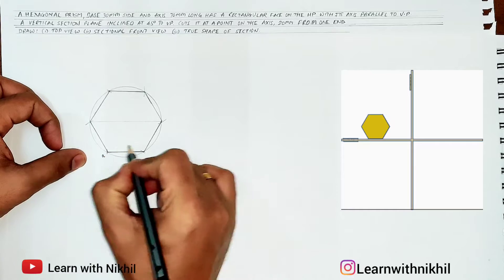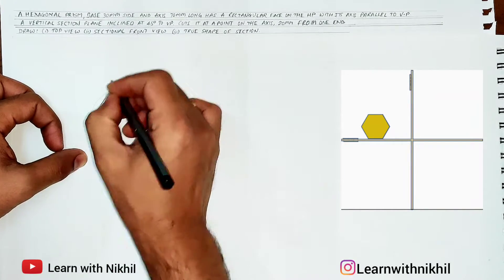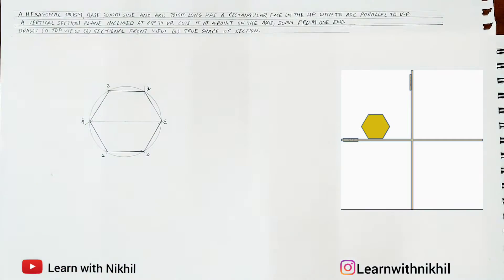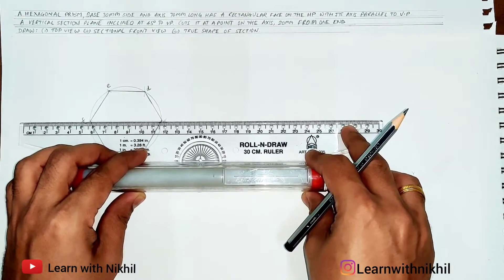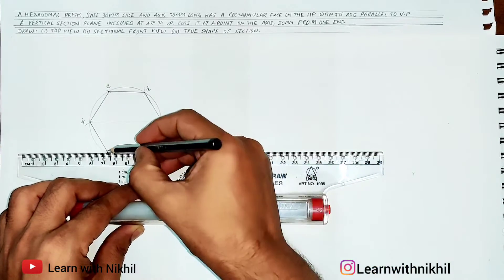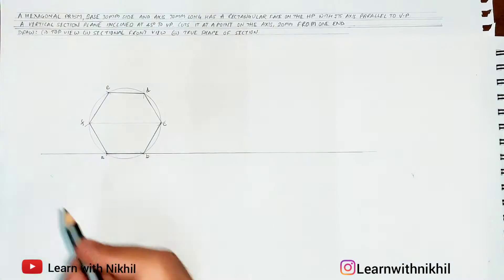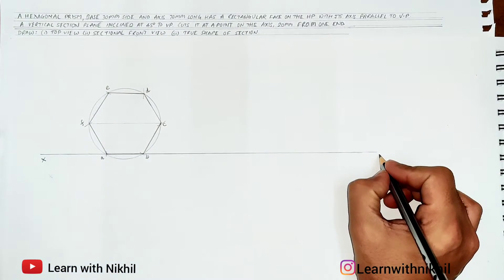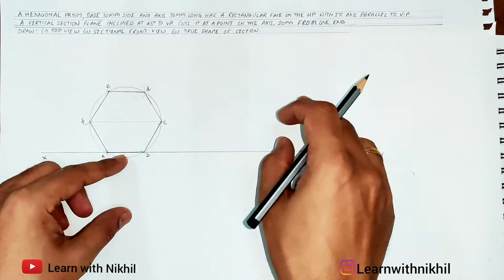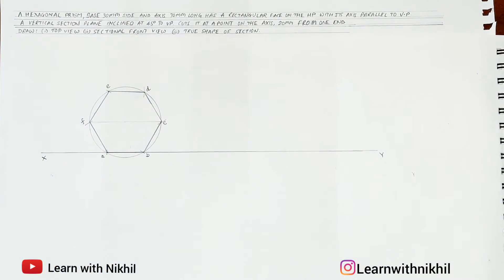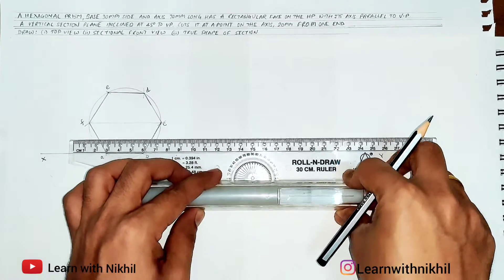The hexagon has an upper side and a bottom side — it rests on sides A and B. I'm marking the corners as A, B, C, D, E, F. Now I draw the center line. The XY line is drawn: the upper part represents the VP (where the front view is seen) and the lower part represents the HP.